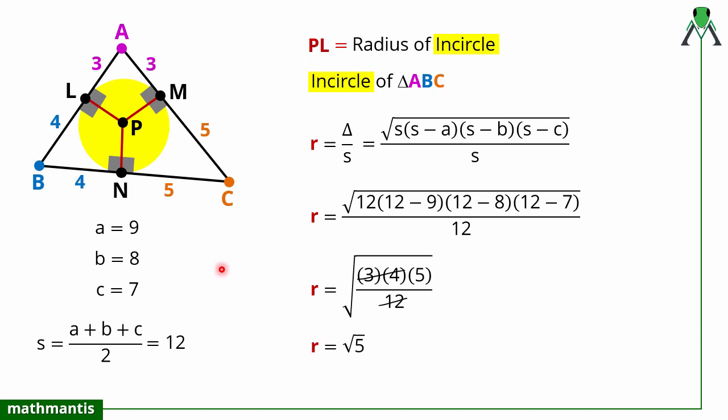So PL = PM = PN = √5. In this way we can solve this question easily. Thank you so much for watching this video, and I will see you in the next video.